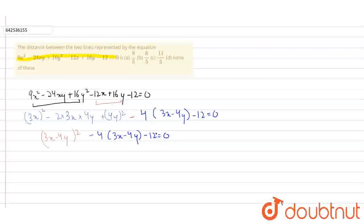We can see that 3x minus 4y is common. So we can substitute the value of 3x minus 4y as t. So it is t square minus 4t minus 12 is equal to 0.